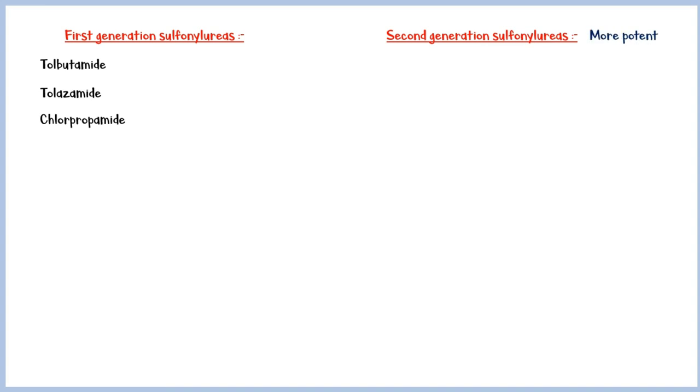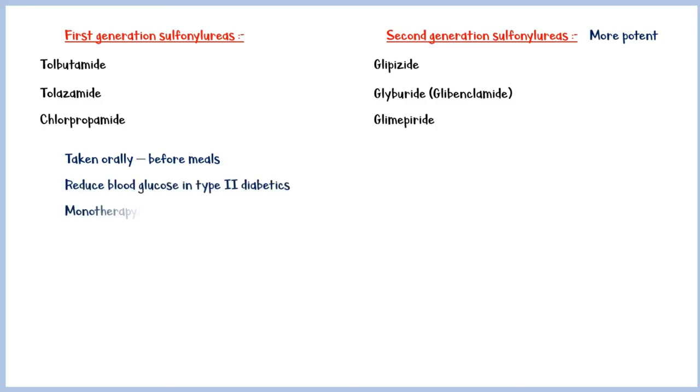There are two classes of sulfonylureas: first-generation and second-generation. First-generation medications include tolbutamide, tolazamide, and chlorpropamide. Second-generation drugs are more potent than the first-generation and are more commonly used today. These include glipizide, glyburide, and glimepiride. These medications are taken orally before meals to reduce blood glucose in type 2 diabetes patients. These medications can be used as monotherapy or can be combined with other oral anti-diabetics or insulin. And they have a glucose-independent action.